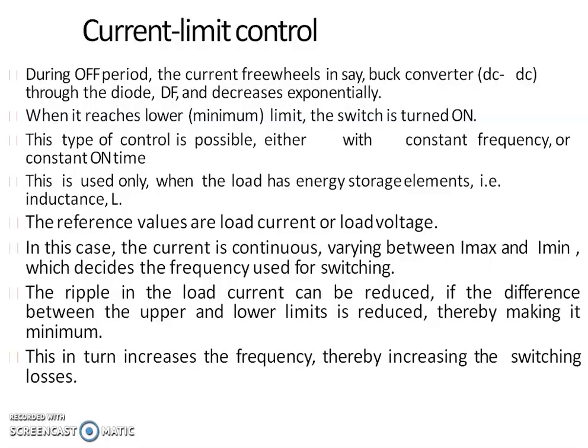These are the two types of control strategies employed in a chopper circuit to control the average output voltage. The two types are Time Ratio Control and Current Limit Control. In Time Ratio Control we control the duty cycle alpha or switching frequency, with two subtypes: constant frequency control and variable frequency control. In Current Limit Control, a maximum and minimum current limit are set — whenever current reaches the maximum limit the chopper switch turns off, and when it falls to the minimum value the chopper switch turns on. Thank you.